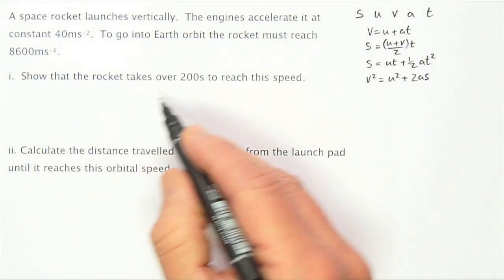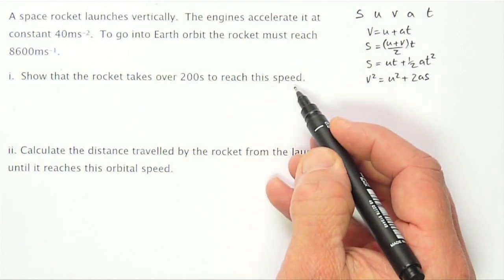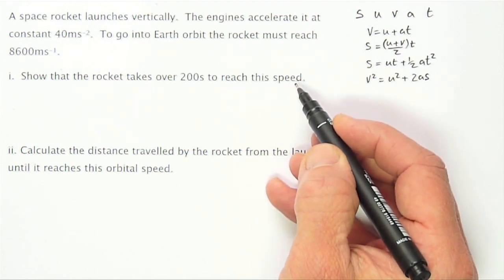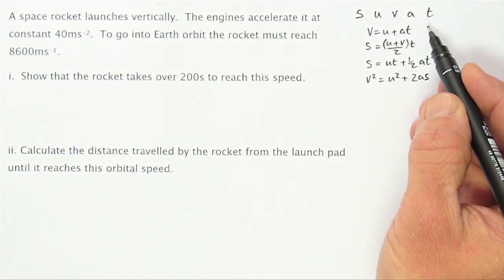Show that the rocket takes over 200 seconds to reach this speed. So what we need to do is identify which of the SUVAT are given to us in the question.